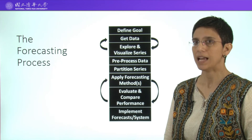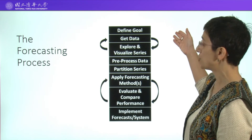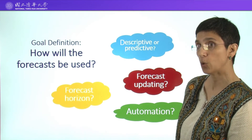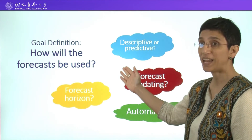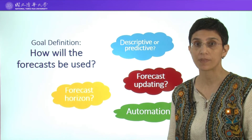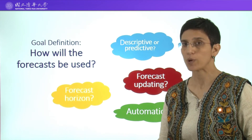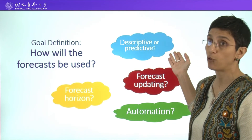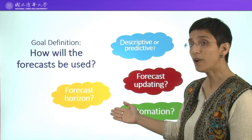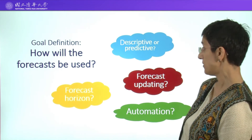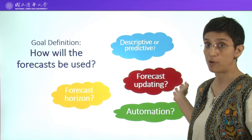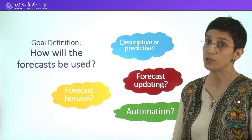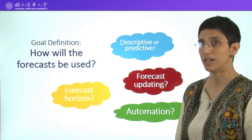Let's look for a minute at the first step, which is defining the goal. Defining the goal requires answering the main question: how will the forecasts be used? To answer that question, we're going to look at lots of different aspects. One aspect is whether the goal is descriptive or predictive. Another aspect is how long we need to forecast for. Do we need to update our forecasts every once in a while? And is our system going to be automated or manual? These are some issues that we would want to tackle.